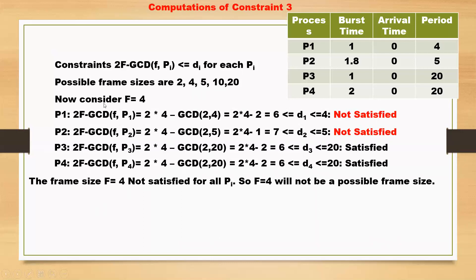Now consider f=4. For P1: 2×4 minus GCD(4,4) = 8 minus 4 = 4... actually 2×4 minus GCD(2,4) = 8 minus 2 = 6, which is not less than or equal to D1=4. This inequality is not satisfied. Since it must be satisfied for all Pi and it fails for P1, no further computation is needed. F=4 is not a valid frame size.